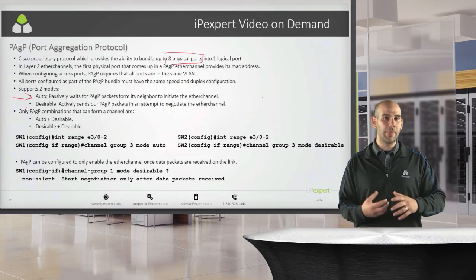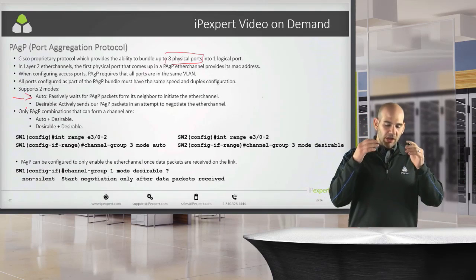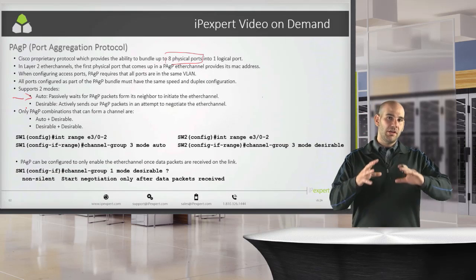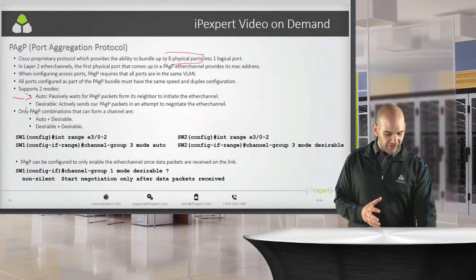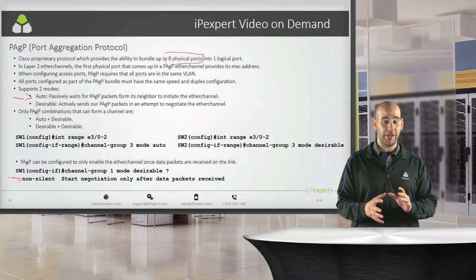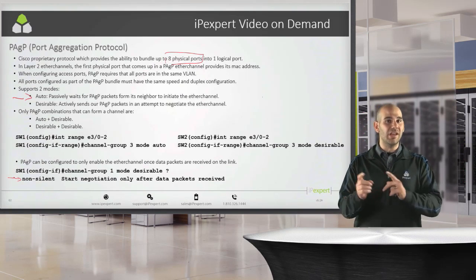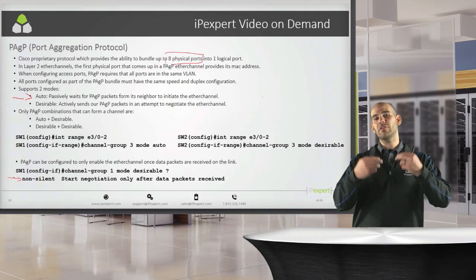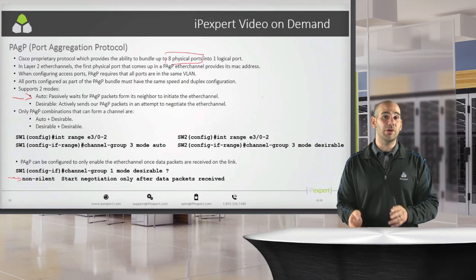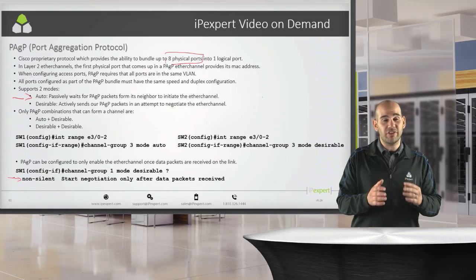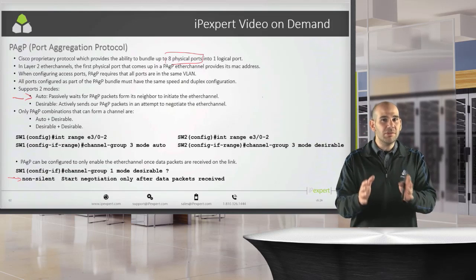When we configure something in desirable, we assume PAGP packets are coming from the other side. By default, PAGP runs in silent mode, meaning we don't expect to receive PAGP packets from the other side. The non-silent mode is the opposite — it will only wait for PAGP packets to be received before establishing the EtherChannel.